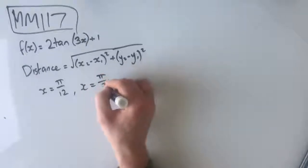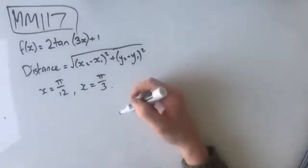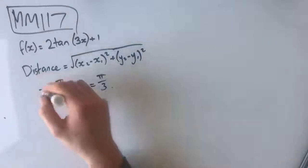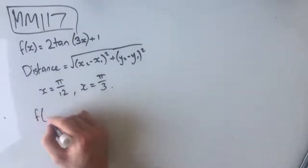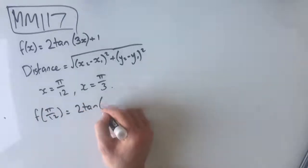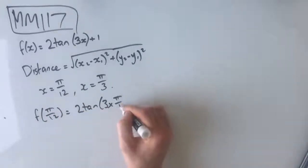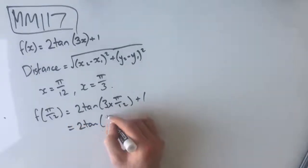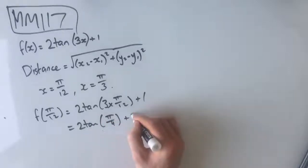In order to find the distance between two points, we need to know the y values of those points as well, not just these x values. So our first task is to find the y values at these x values. We go f of π/12 equals 2 tan of 3 times π/12 plus 1, which gives us 2 tan of π/4 plus 1.